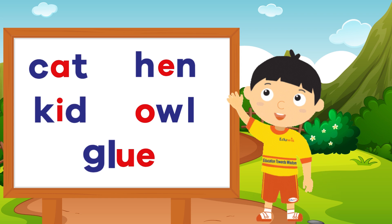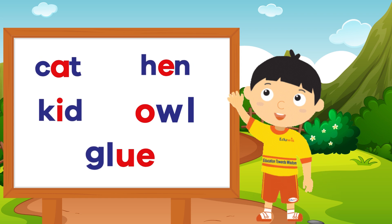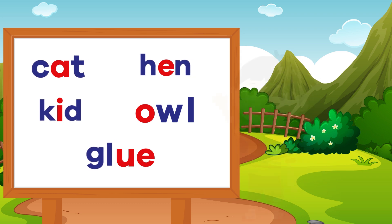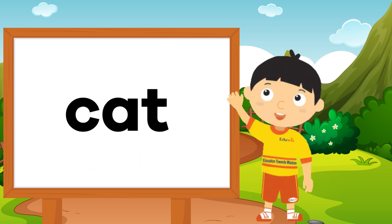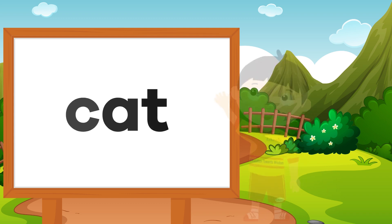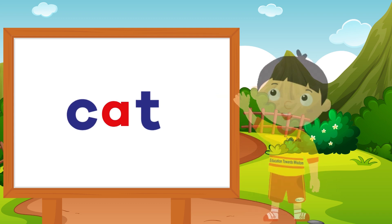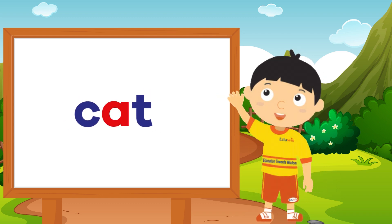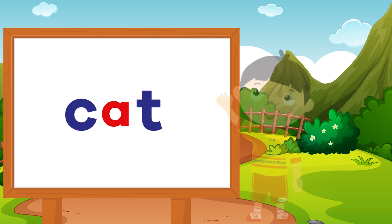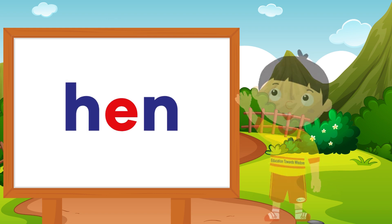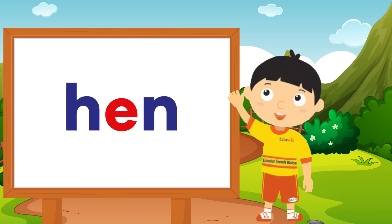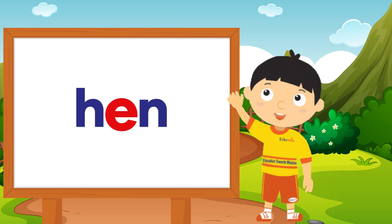And the other letters are consonants. C, A, T — cat. C and T are consonants. H, E, N — hen. H and N are consonants.